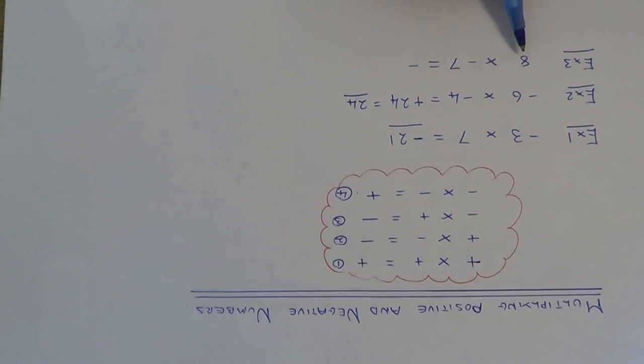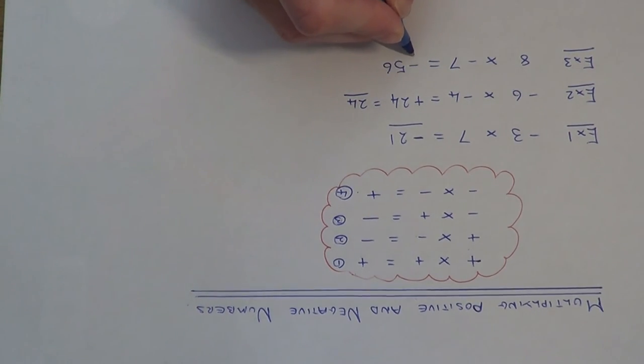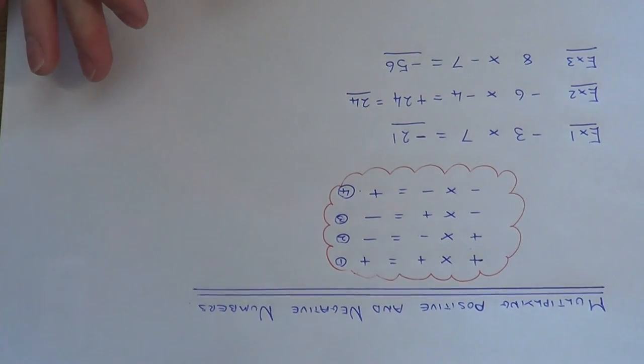We just work out eight times seven. Eight times seven is 56. So the final answer is minus 56. Thanks for watching.